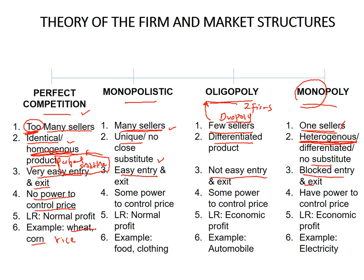The price equilibrium is determined by the interaction between demand and supply in the market, giving you the market price. In perfect competition, the firm has no power to control the price, so that is why you only get a normal profit. Normal profit means break-even — there is no profit and there is no loss.